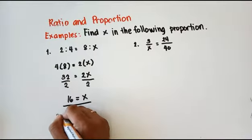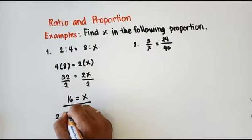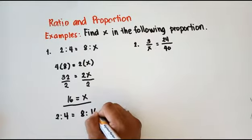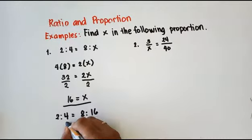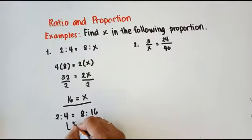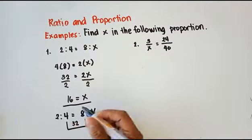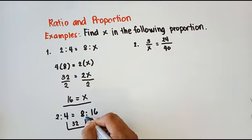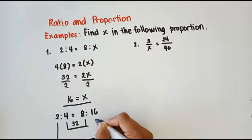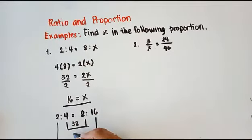So we have 2 is to 4 is equal to 8 is to 16. When we multiply the means: 4 times 8 is 32. Then 2 times 16 is also 32. This confirms our answer.